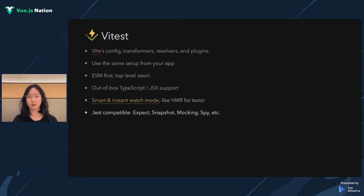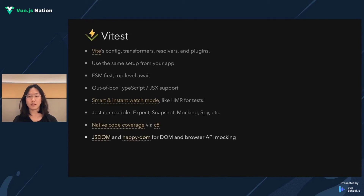One important note is that Vitest is compatible with the Jest API, which means it supports expect, snapshot, mocking, and even more. It uses C8 to do native code coverage directly from V8, and allows you to set JSDOM or Happy DOM environment for component testing.